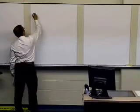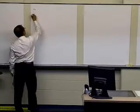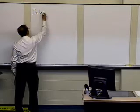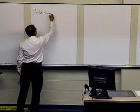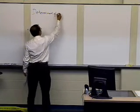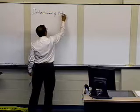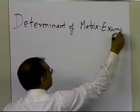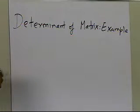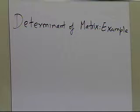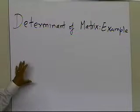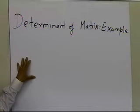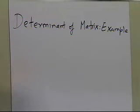In this segment, we're going to find the determinant of a matrix and look at an example. We're going to use the Gaussian elimination method — specifically the forward elimination part — on the matrix, and use that to find the determinant.